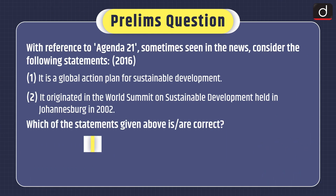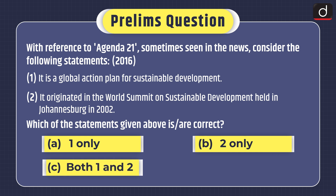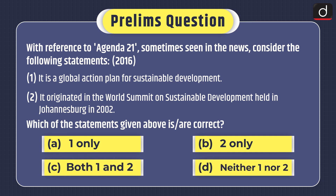Now for practice questions. A 2016 prelims question: With reference to Agenda 21, sometimes seen in the news, consider the following statements: one, it is a global action plan for sustainable development; two, it originated in the World Summit on Sustainable Development held in Johannesburg in 2002. Which of the statements given above is or are correct — one only, two only, both one and two, or neither one nor two?